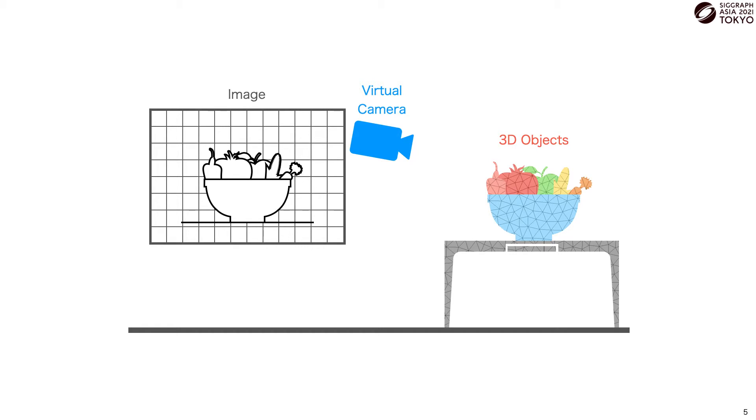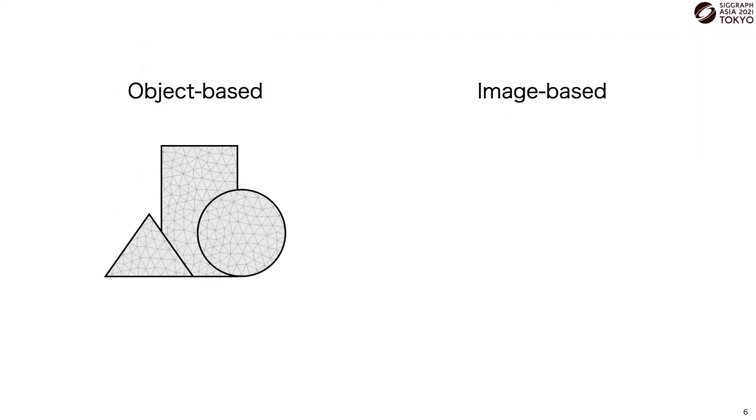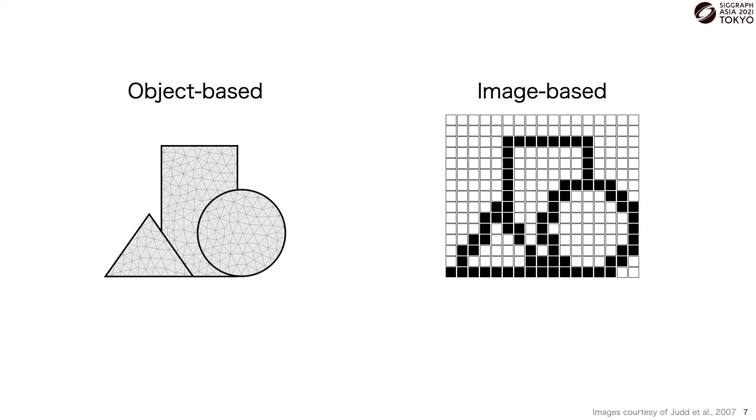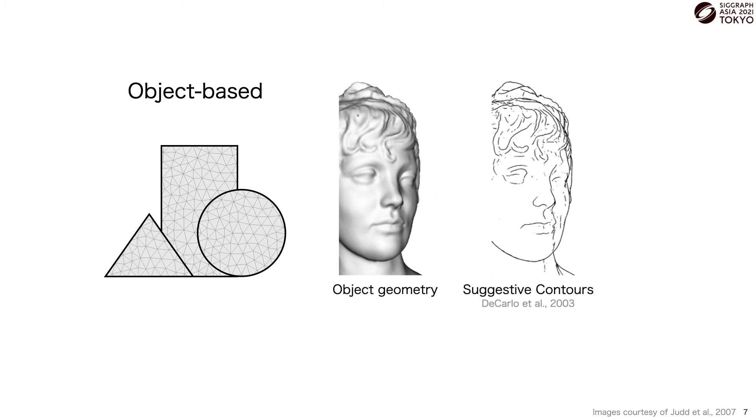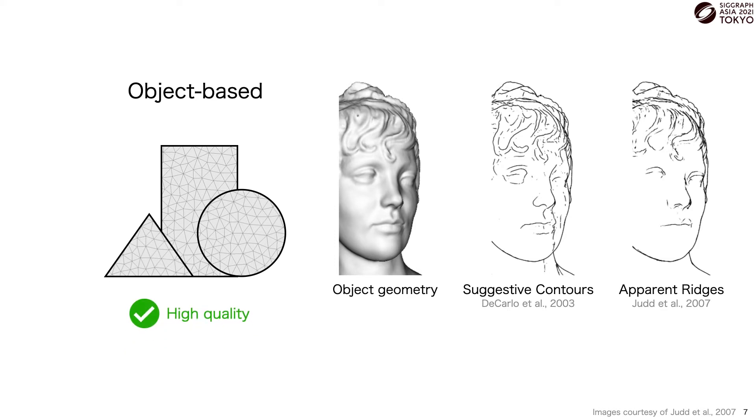There are several existing methods that explore ways to generate lines for 3D objects, and they can be broken down to generally two categories: object-based and image-based. Object-based methods work directly on object geometry, like DiCarlo and colleagues' suggestive contours and Judd and colleagues' apparent ridges. These methods are capable of generating high-quality lines, but their performance scales proportional to geometric complexity, making them computationally expensive for large scenes.